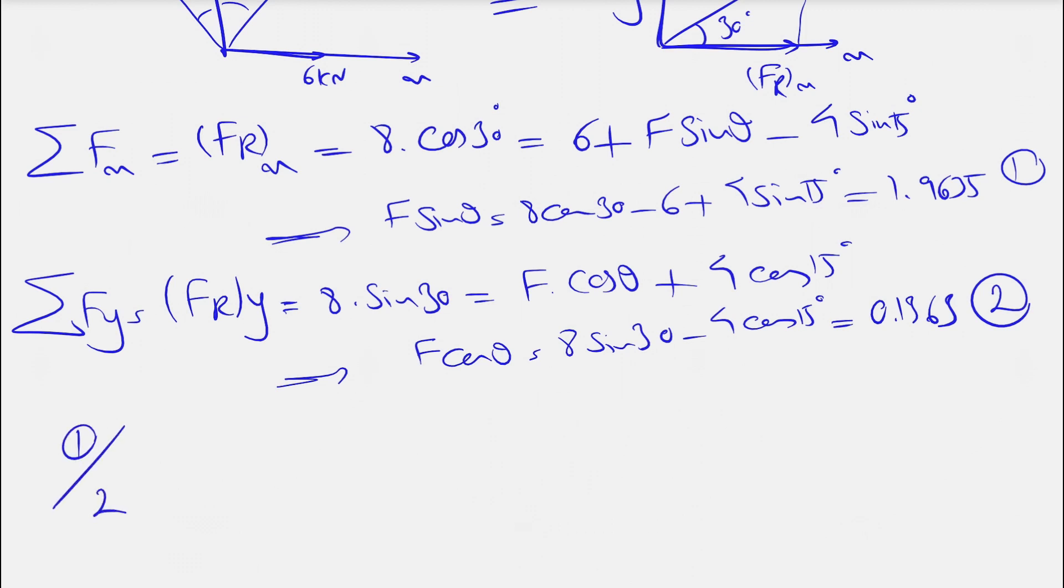Let's call this 1 and this one 2. And if we divide 1 by 2, we'll have F sine of theta over F cosine of theta, which will be tangent of theta equal to 1.9635 over 0.1363. And if we calculate that, we'll get 14.406. And from this, we can find the theta.